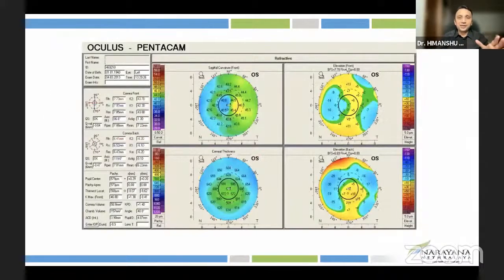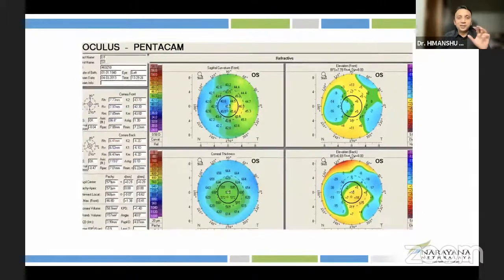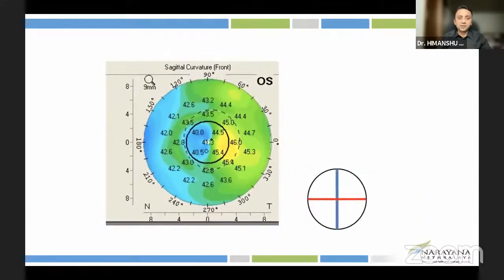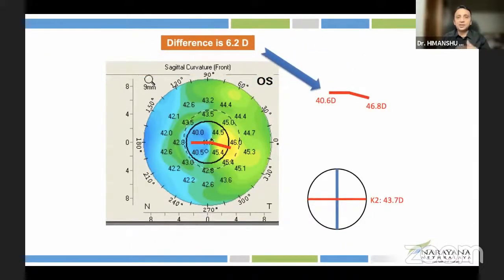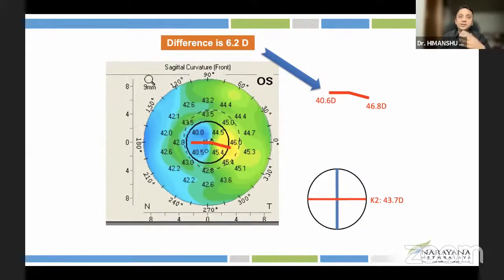If you look at the Pentacam scan and focus on the curvature map, there is significant asymmetry in the steep axis. One side shows 40 diopter K values, the other side shows 40.6 diopter — almost 6 diopters of difference.